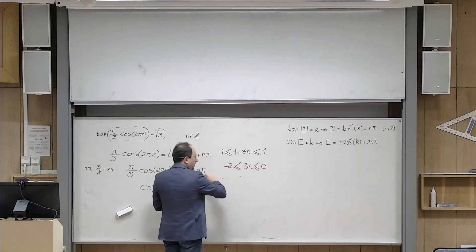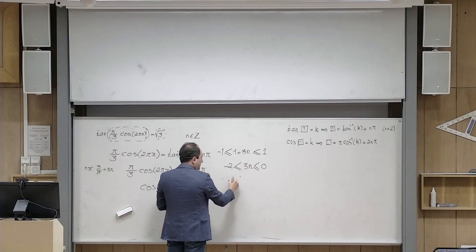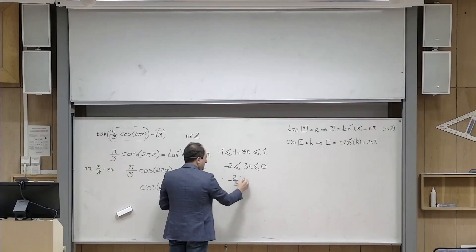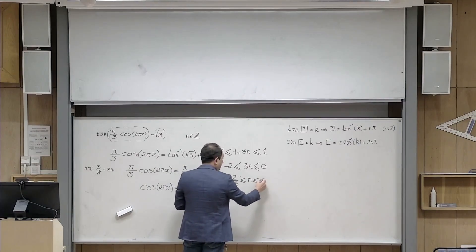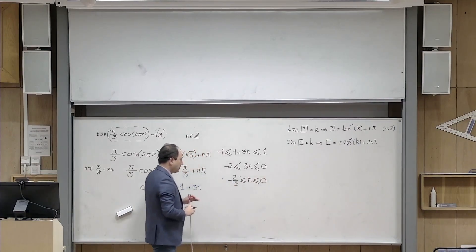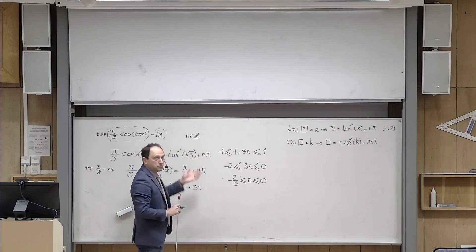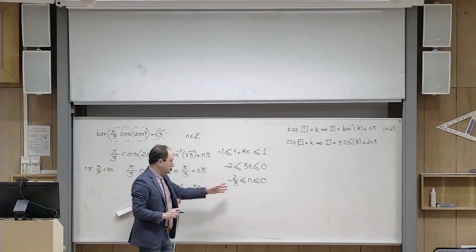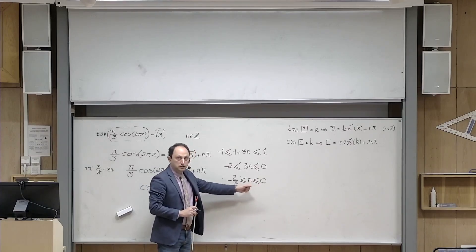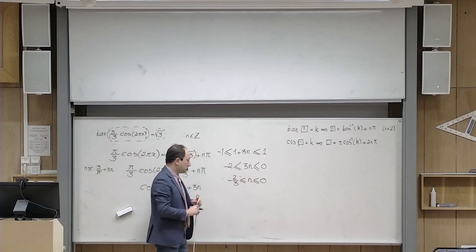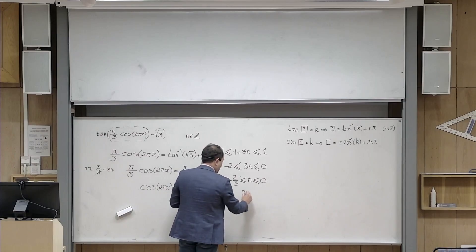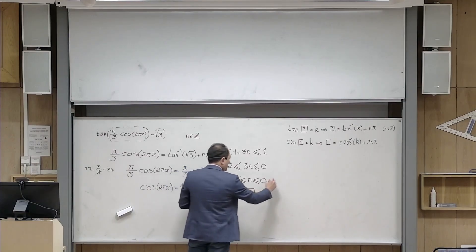If I add minus 1 here, it becomes 0. And I divide everything by 3, so it becomes minus 2 thirds is less than or equal to n is less than or equal to 0. On the other hand, I know that n is an integer. So there is only one integer satisfying this condition, and that is n equals to 0. So this means that immediately, I realize that n is 0, because n is an integer.